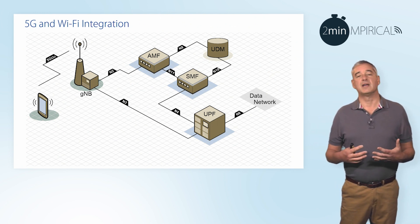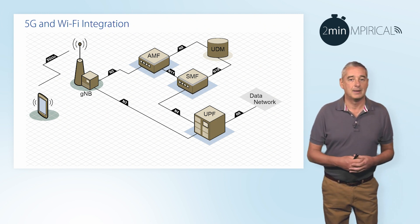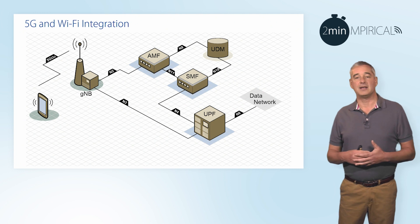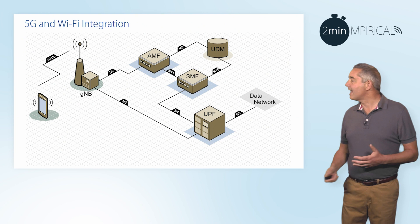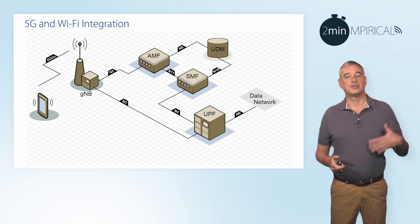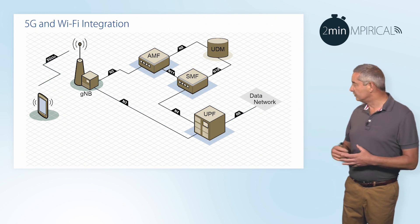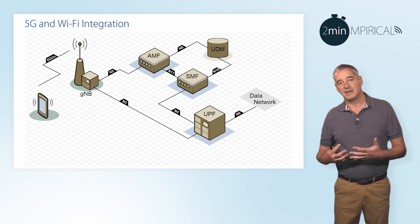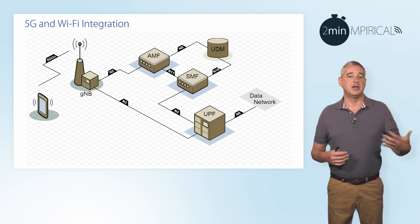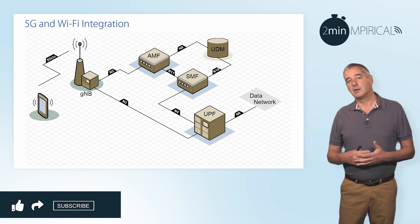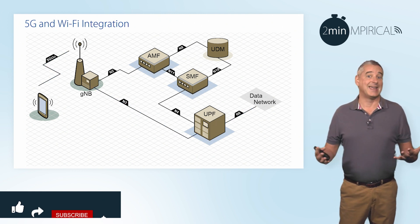The core network is broken down into the control element, made up of the AMF, the SMF, and the UDM, and the user plane element — the User Plane Function or UPF. The key aspect of our 5G network is the ability to support a PDU session, which is where data is carried across the network from the device up through the gNodeB, then out through the UPF anchor point onto the external data network, potentially the internet.